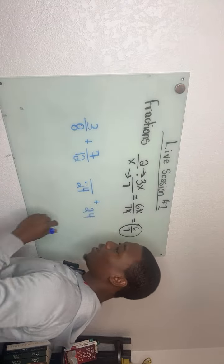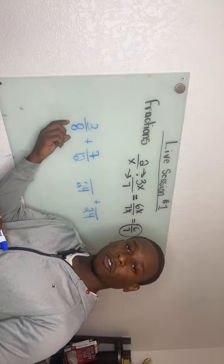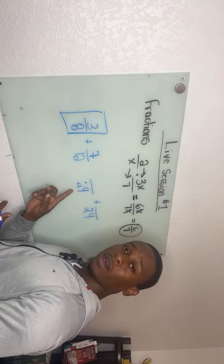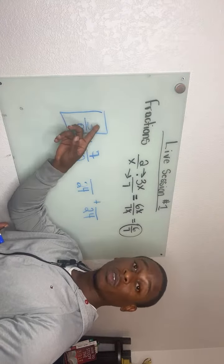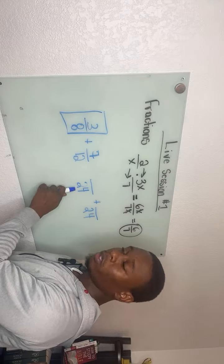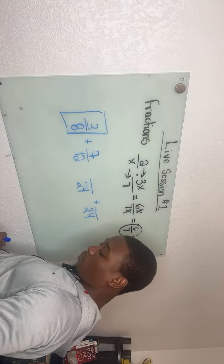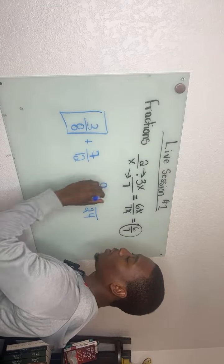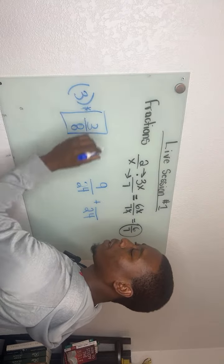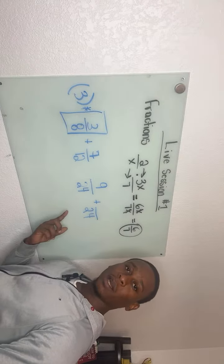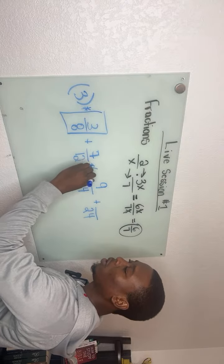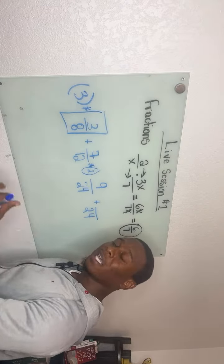Let's rewrite our denominator as 24. Now we have the same denominator, so we go back to the first fraction — what did we multiply 8 by to get 24? Whatever that number is, we multiply the top by the same quantity. We multiply 8 times 3 to get 24, so we multiply the numerator 3 by 3 as well to get 9 over 24. For the second fraction, we multiply 12 times 2, so we go back and multiply 7 by 2 as well.